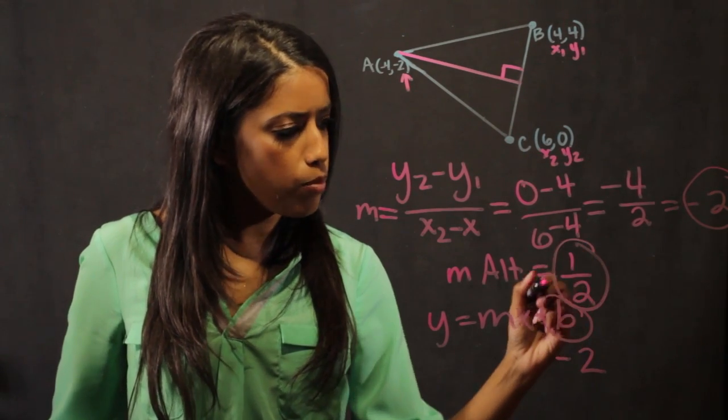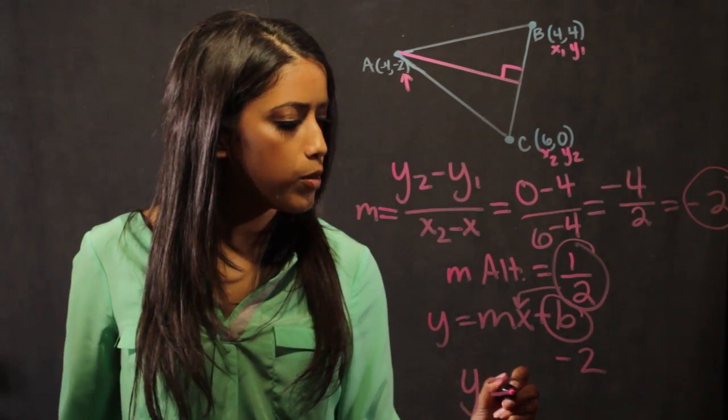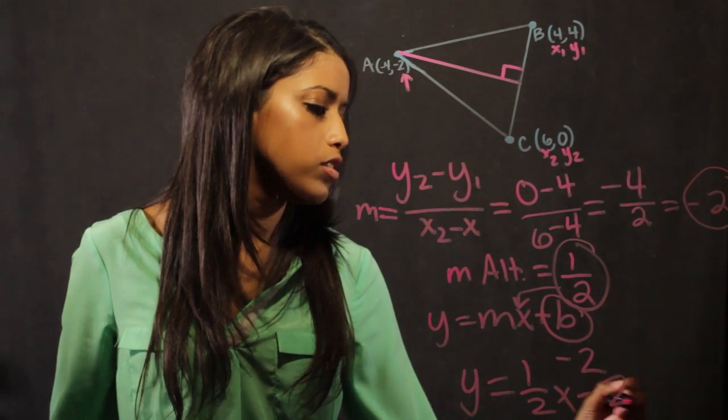I take my slope, I plug it in for x, and I get the equation for my altitude, which is y equals 1 half x minus 2.